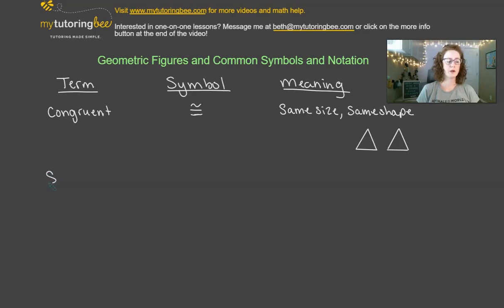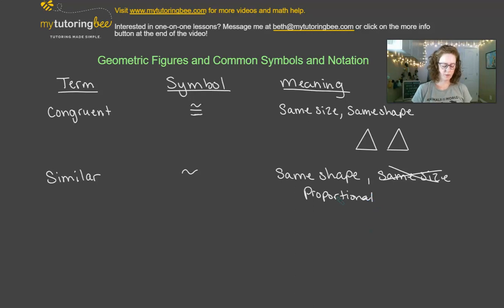Another term that we can talk about is the term similar. So a lot of times we'll see just a squiggly line to show to indicate that two figures are similar to one another. So what similar means is that it is the same shape, but it's not necessarily the same size. However, it does need to be proportional.